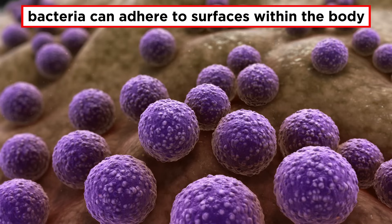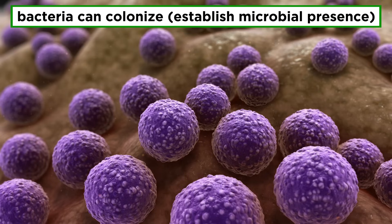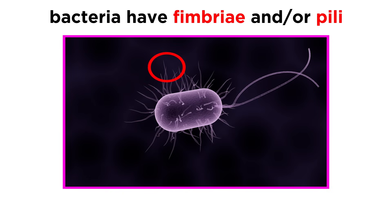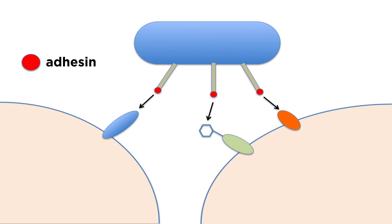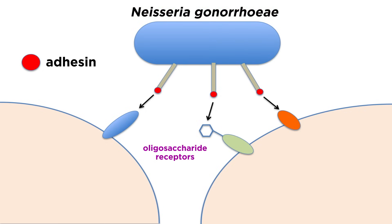Bacteria have a vast arsenal of mechanisms to both adhere to surfaces within the body and colonize — which means to establish a microbial presence and multiply — once they've made contact. For instance, prokaryotic cells have short hair-like structures called fimbriae, or pili, that they use to attach to various surfaces. Some bacteria have adhesins on the tips of these pili that have specifically evolved to allow them to bind tightly to cells in your body. For example, the pili of Neisseria gonorrhoeae binds specifically to oligosaccharide receptors on epithelial cells.